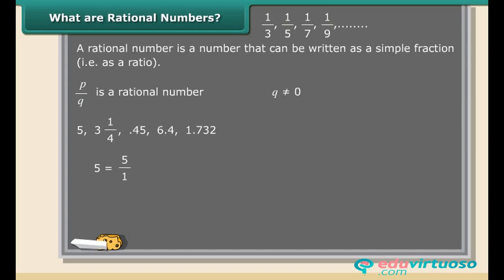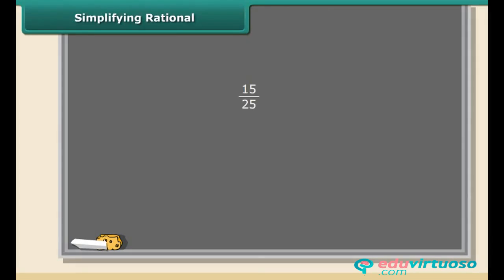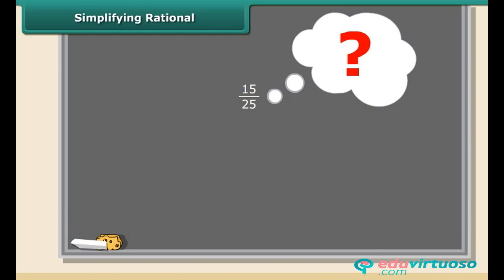Rational numbers are simply the numbers of arithmetic. Sometimes a rational number may not be in simplified form. It can be further simplified — here we can divide the numerator and denominator by five to get three by five. This is the simplest form. Remember, we can simplify a fraction by dividing the numerator and denominator by a common factor.